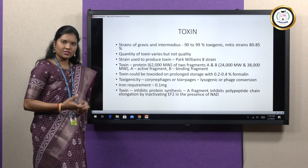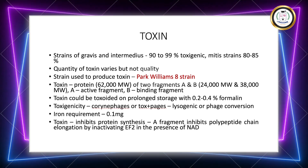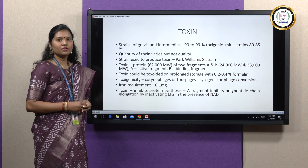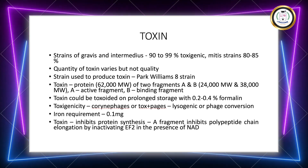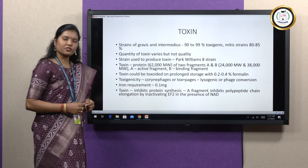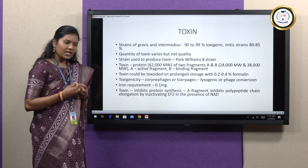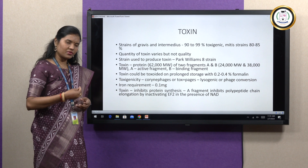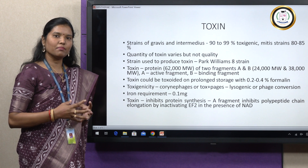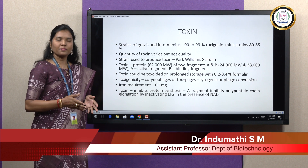The most important strain continuously used to produce the toxin is called Park-Williams 8 strain. The toxin is basically a protein which has been crystallized, with a molecular weight of 62,000 Daltons. It is composed of two fragments, A and B. Fragment A is the active fragment with molecular weight 24,000 Daltons; Fragment B is the binding fragment with molecular weight 38,000 Daltons. On release from the bacilli, the toxin is initially inactive because the active site on Fragment A is masked, and it is released only when protease present in the medium or tissues activates it.